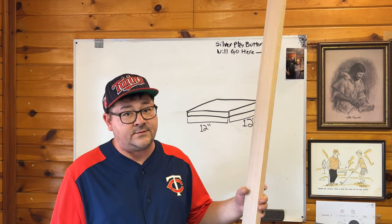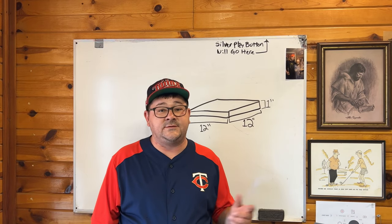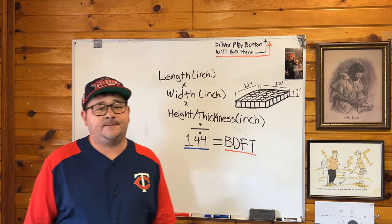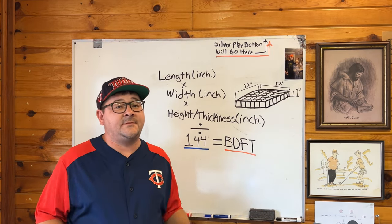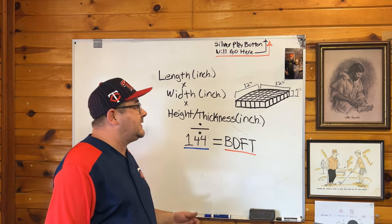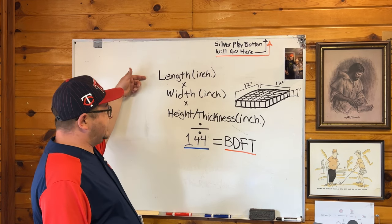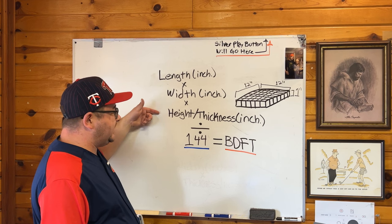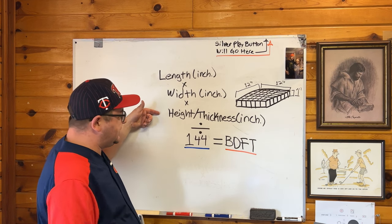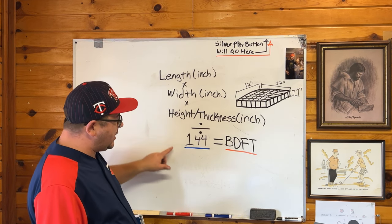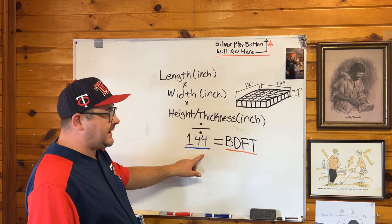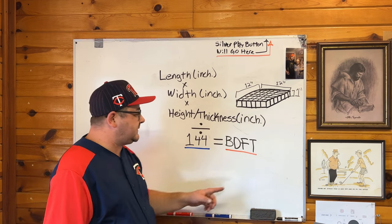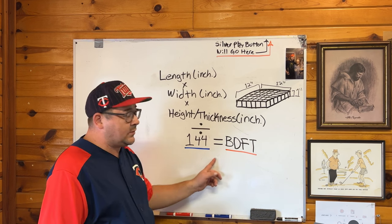Well I'm going to show you. This simple formula will teach you how to find board footage quick and get your jobs done quicker. The simplest formula is: length in inches times width in inches times the height or thickness in inches, and you take that number and divide it by 144 — which happens to be how many cubic inches are in a board foot — and that will give you your board footage.